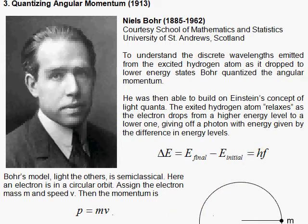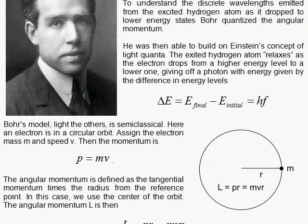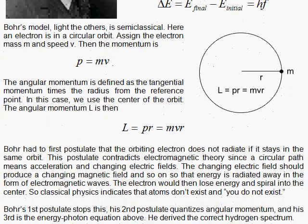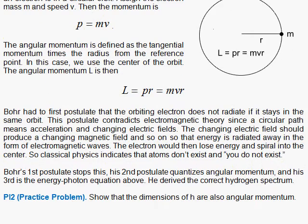So, in Bohr's model, he looks at the momentum of a particle going in a circle, mv, and then he quantizes it. Well, first he finds the angular momentum, which is the definition in classical physics is to take the distance from your reference point here at the center times the tangential momentum. So, that's mv. So, mv times r is angular momentum.